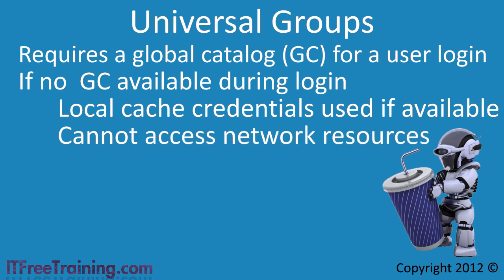In order for the server to do this when universal groups are being used, it requires access to a global catalog server. If no global catalog servers are available, the connection will be denied. A server will always double check each connection before it is allowed access. This is done to ensure the user has not been disabled or the account is locked.